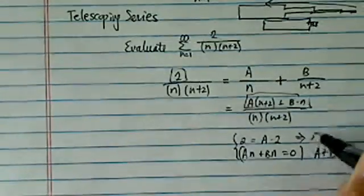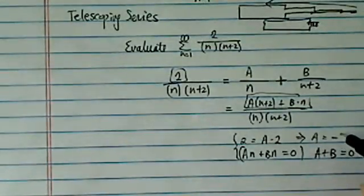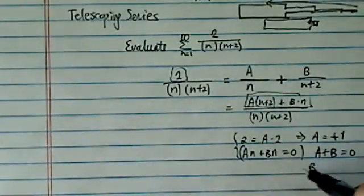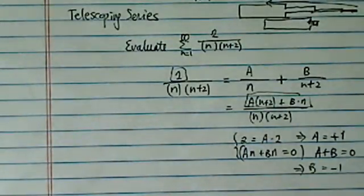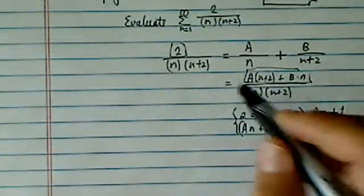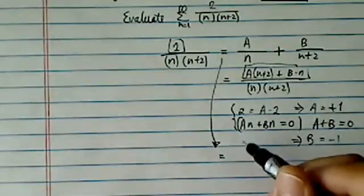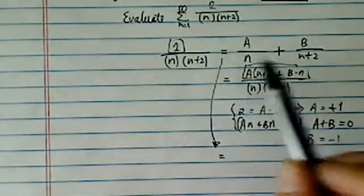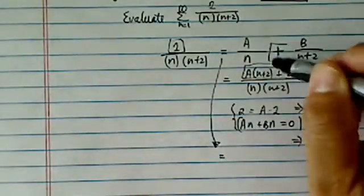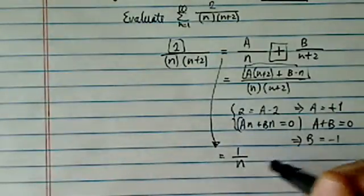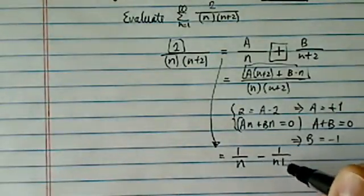So from here, it's pretty easy, a equals plus 1. If a equals plus 1, then b equals minus 1. So therefore, by doing the partial sum and solving for a and b, we effectively say, you know what, when I split this multiplication here into addition and subtraction, I have a equal to 1, so it's 1 over n minus 1 over n plus 2.